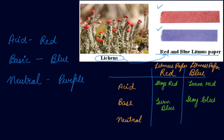For a neutral solution — such as a salt and water solution — the red litmus paper will turn purple or stay red, and the blue litmus paper will either turn purple or stay blue. This is how you identify a neutral substance.